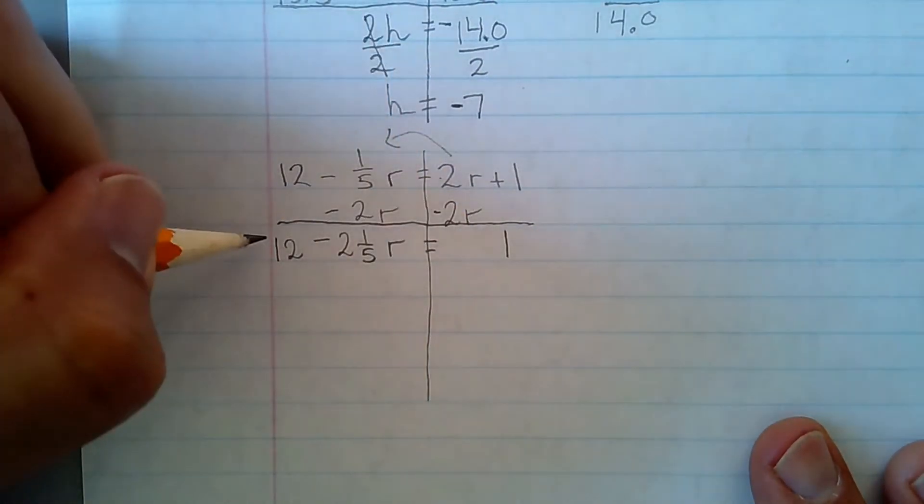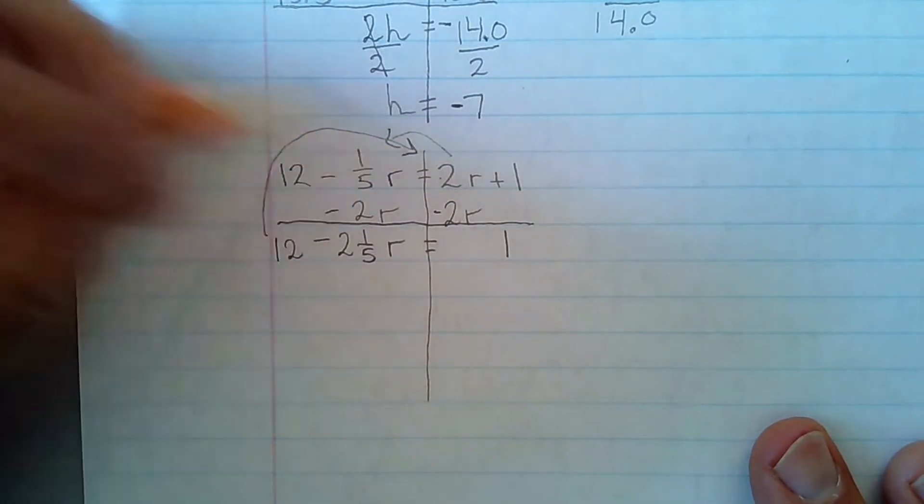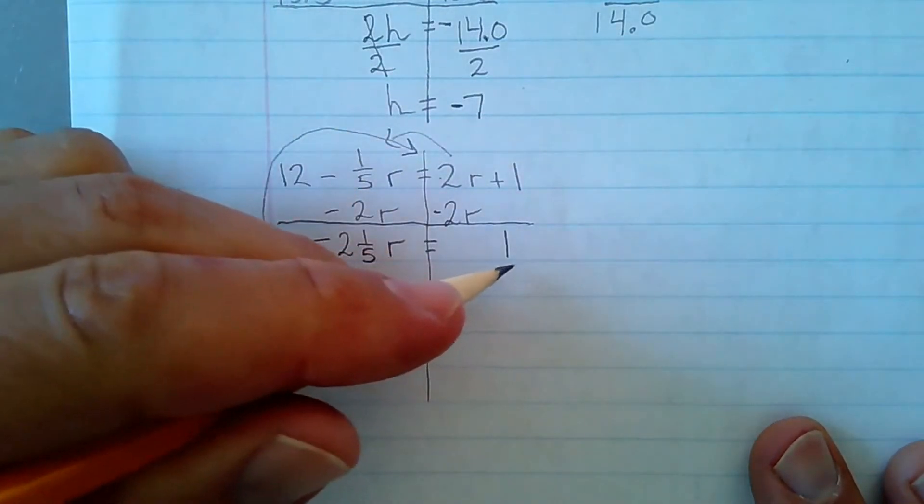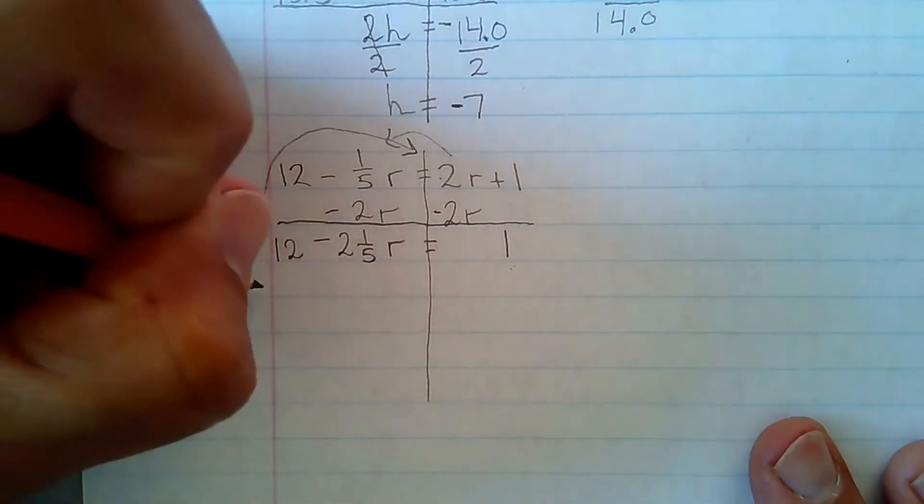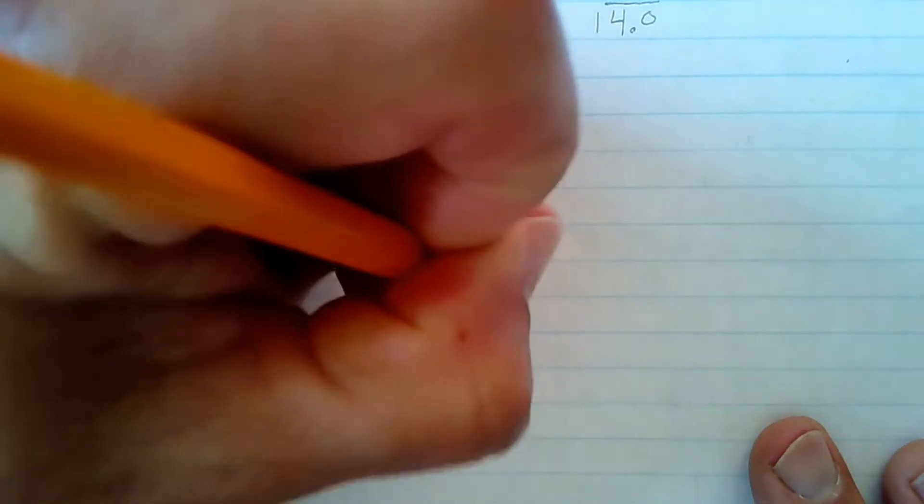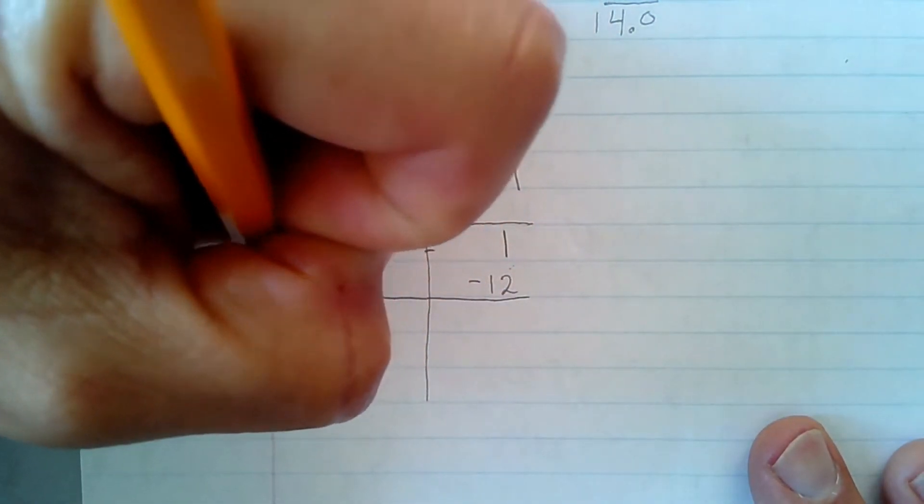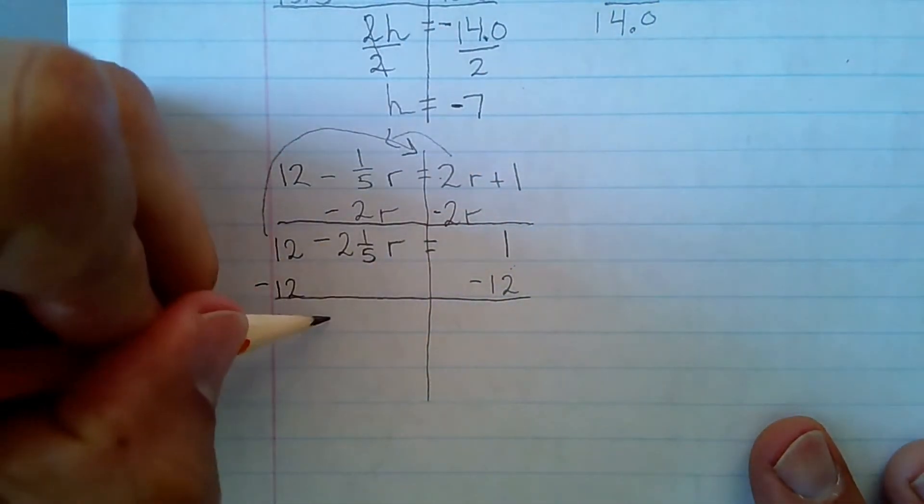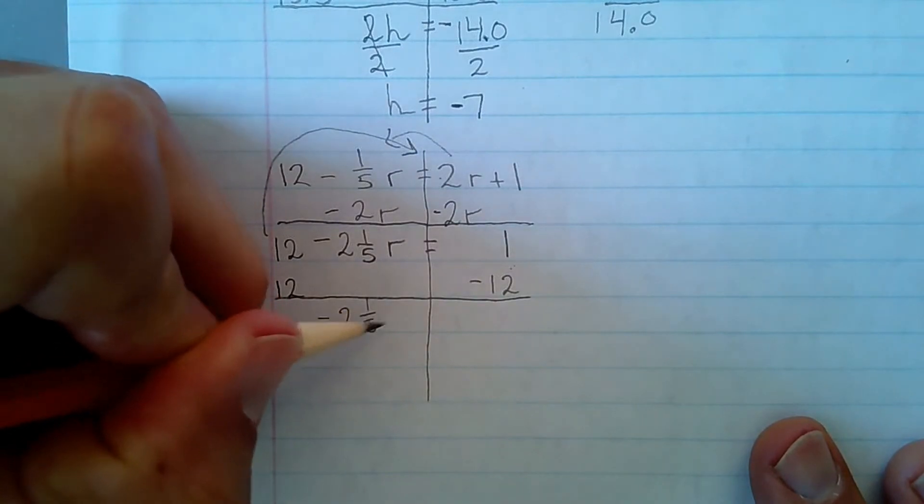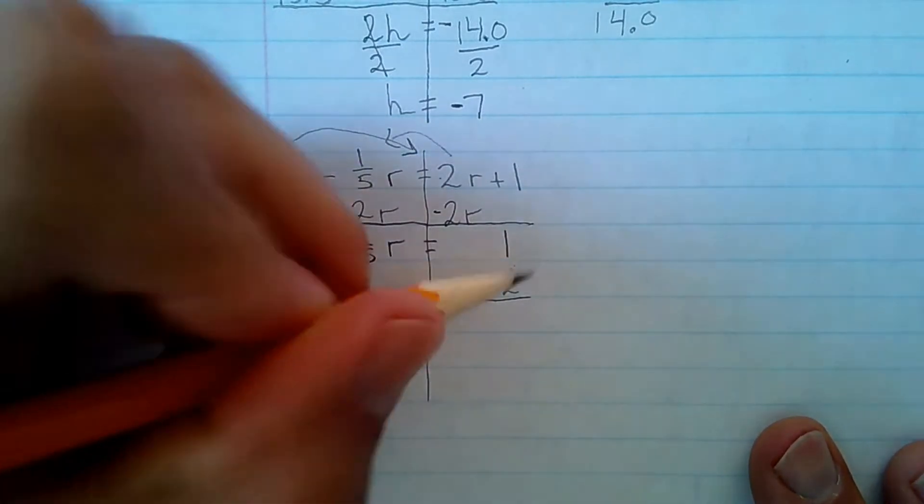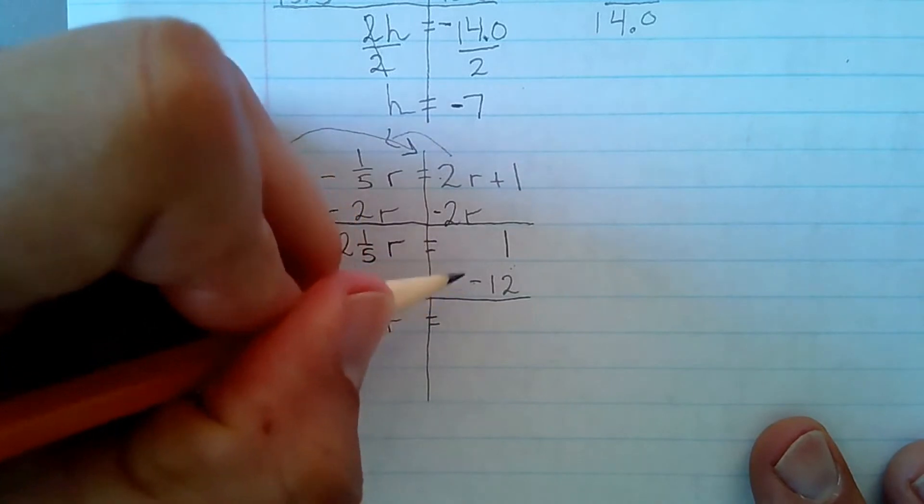Now I'm going to bring this 12 over to the right-hand side. It's going to pass this. I'm going to combine this with the 1. That means I have to use inverse operations. And that's 0. I'm going for that. This is negative 2 and 1 fifth times r equals a negative 12 plus 1. That's negative 11.